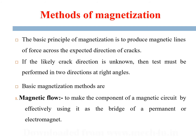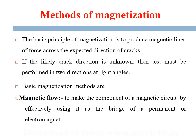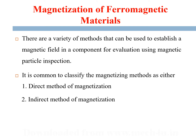The basic methods of magnetization are: first, magnetic flow — making the component part of a magnetic circuit by using it as a bridge of a permanent or electromagnet; second, current flow — passing an electric current through the specimen along its direction throughout the region where cracks are expected; third, induced current flow; and fourth, electromagnetic induction — passing current through a conductor placed inside a hollow specimen or wrapped around it. A magnetic field can be established in a component by two methods: direct magnetization and indirect magnetization.